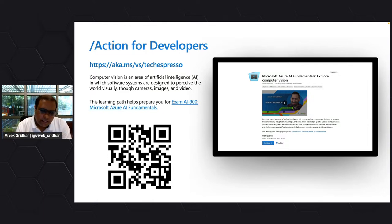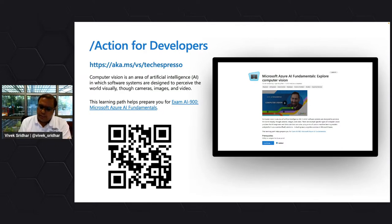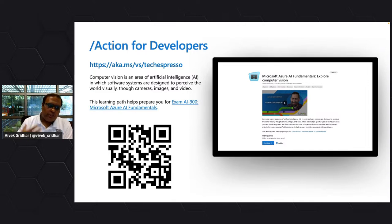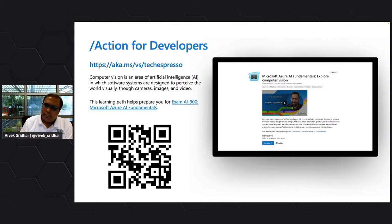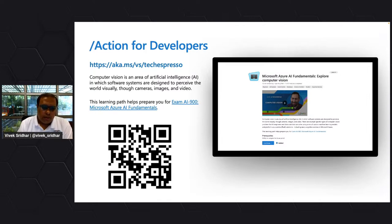Computer vision is bringing artificial intelligence to your system based on data which is part of an image, a video, or through cameras. With all these different kinds of data, how do you build AI?